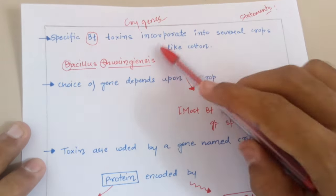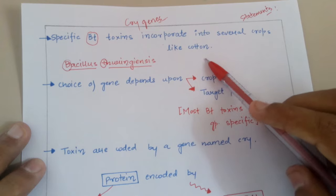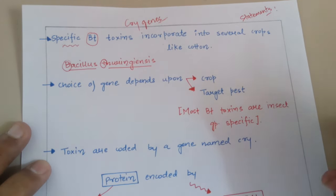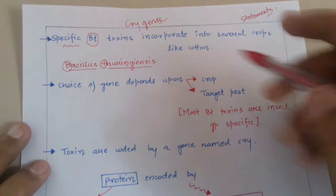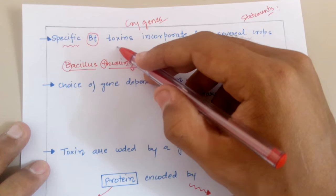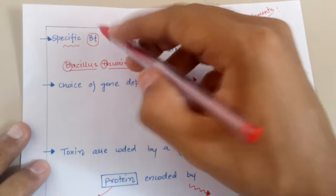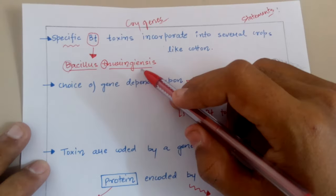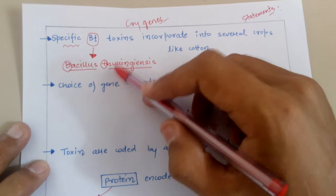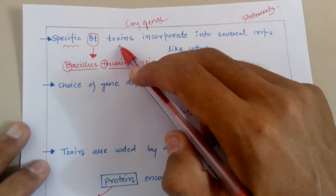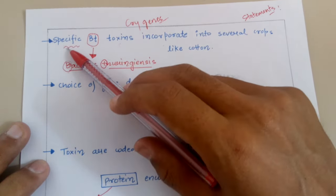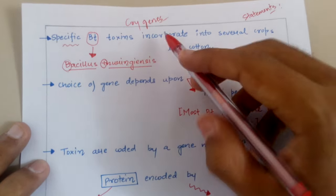Specific BT toxins incorporate into several crops like cotton. These are insect-pest specific — if you want to kill a particular species of insect pest, you have to choose specific BT toxins. BT arises from Bacillus thuringiensis — B from Bacillus and T from thuringiensis. These toxins are proteins or chemicals extracted from Bacillus thuringiensis and are specific in nature.